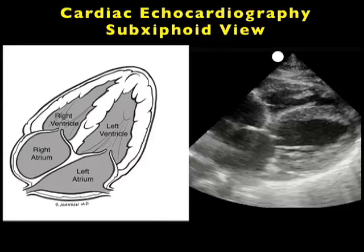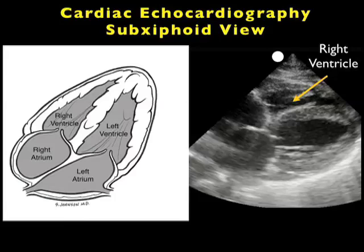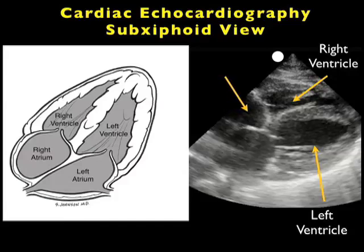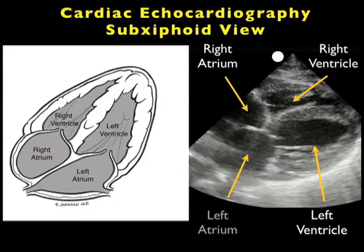Let's take a look at the image obtained from the subxiphoid view. Here's a pictorial to the left and an ultrasound image to the right. The first chamber encountered directly below the liver — our acoustic window onto the heart — will be the right ventricle. Immediately posterior to the right ventricle we see the left ventricle, which has more muscular and hypertrophic walls. From this plane we can also image the right atrium to the left of the right ventricle and the left atrium just to the left of the left ventricle. We can also appreciate the white line of the pericardium circumferentially surrounding the heart.